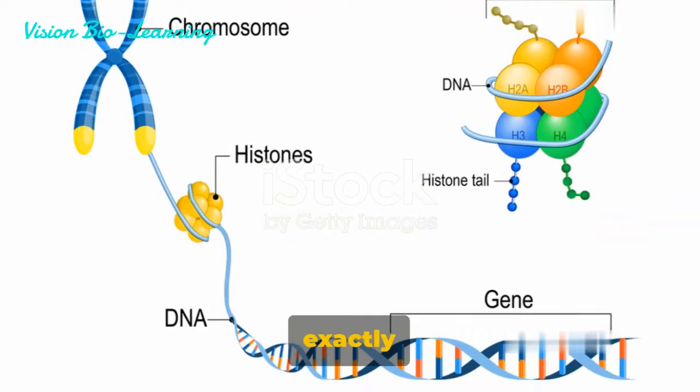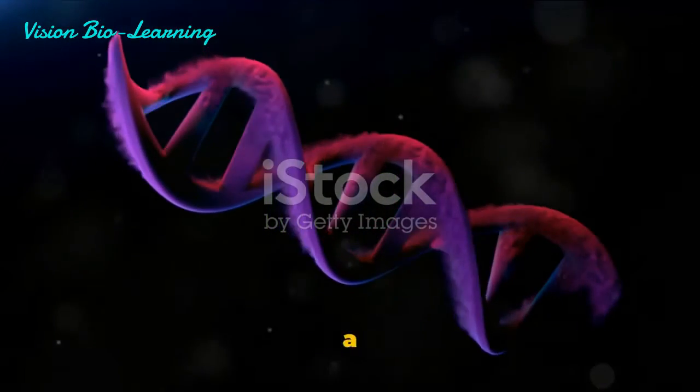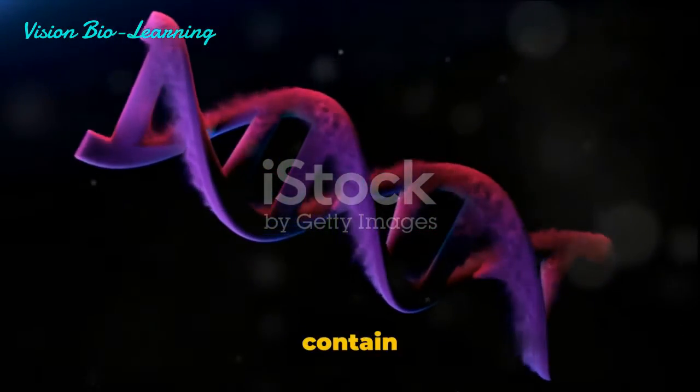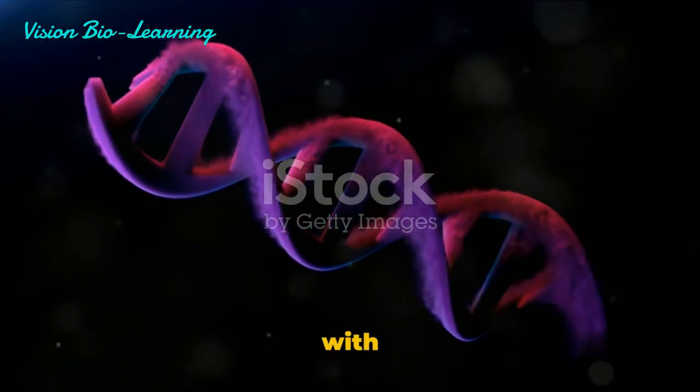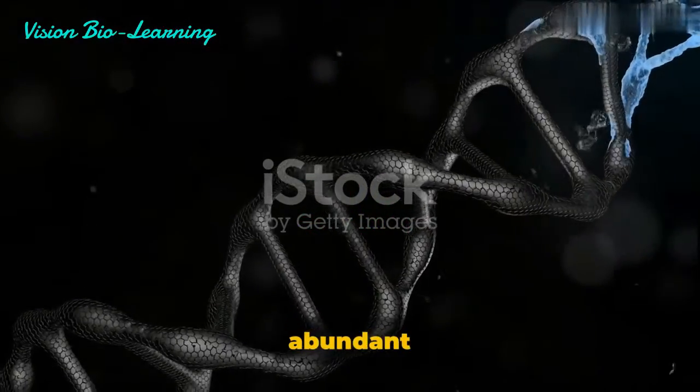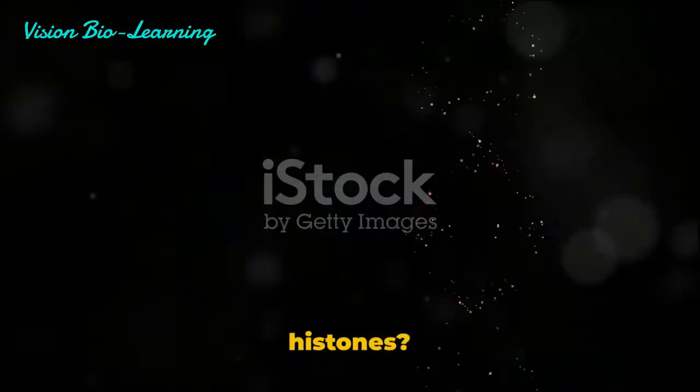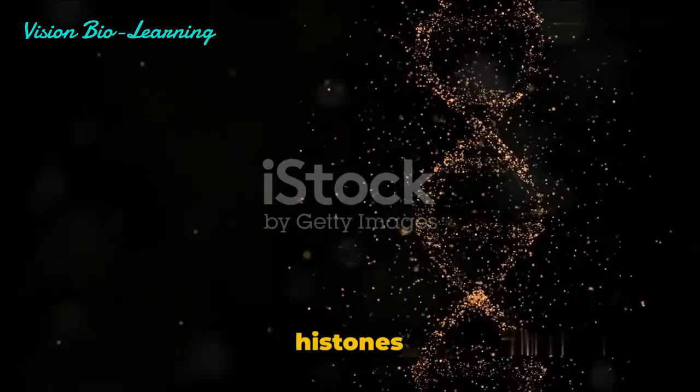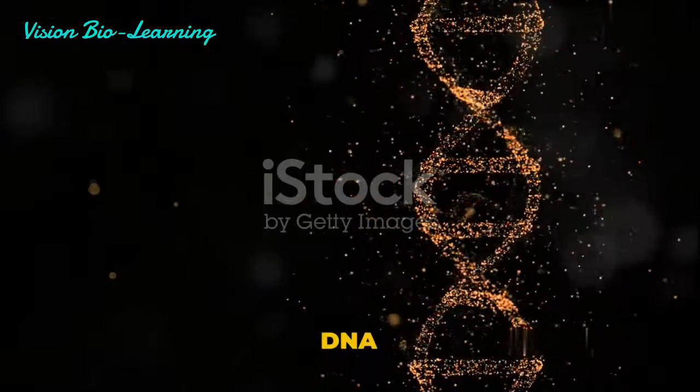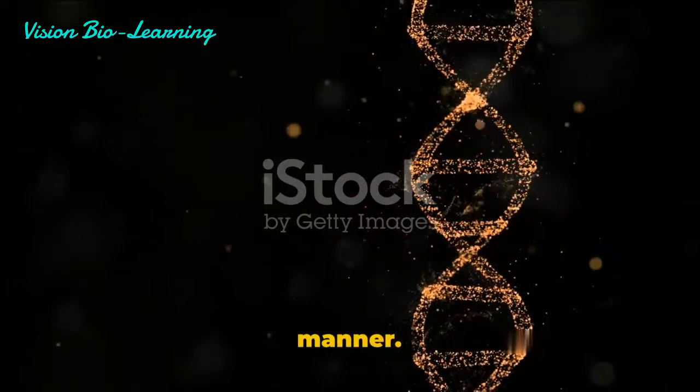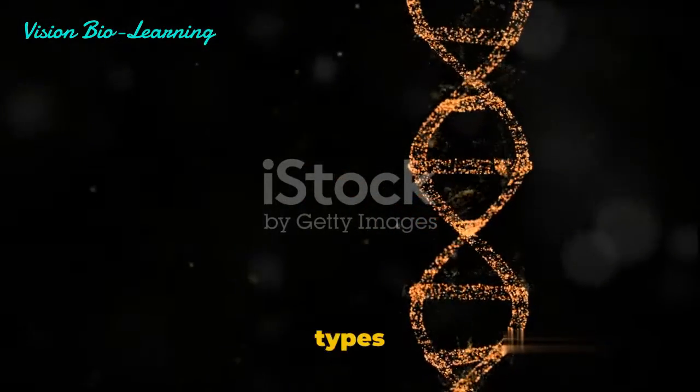But how exactly does this packaging work? Chromosomes aren't just a jumble of DNA. They contain both DNA and protein, with histones being the most abundant protein. Now, you might be wondering, what are histones? Well, histones are proteins that help package the DNA in a compact, efficient manner.